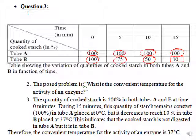Analysis: the quantity of cooked starch is 100% in both tubes A and B at time 0 minutes. As time increases from 0 to 15 minutes, the quantity of starch remains constant at 100% in tube A placed at 0 degrees Celsius, but decreases to 10% in tube B placed at 37 degrees Celsius. This indicates that the starch is not digested in tube A but is digested in tube B. Conclusion: the convenient temperature for the activity of an enzyme is 37 degrees Celsius — it is the optimum temperature.